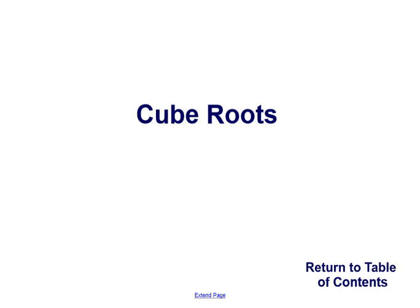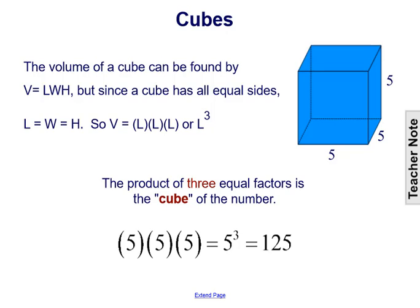Cube roots. The volume of a cube can be found by using the formula volume equals length times width times height. But since a cube has all equal sides, the length equals the width, which equals the height.